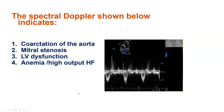Here's a spectral Doppler — what's the diagnosis? We're seeing an alteration in the magnitude of the LVOT VTI. A roughly normal LVOT VTI should be in the high teens to low 20s, dependent on heart rate. What you're seeing is pulsus alternans, which is indicative of severe LV dysfunction.